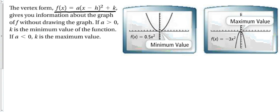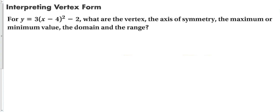Vertex form, a(x − h)² + k, gives us information about the graph without having to draw it. We already know that if a > 0 we have a minimum and if a < 0 then k is the maximum. The y-coordinate of the vertex is the minimum or maximum value. From vertex form we can determine the vertex, axis of symmetry, maximum or minimum, and the domain and range.